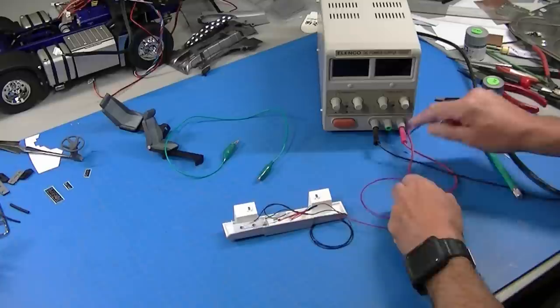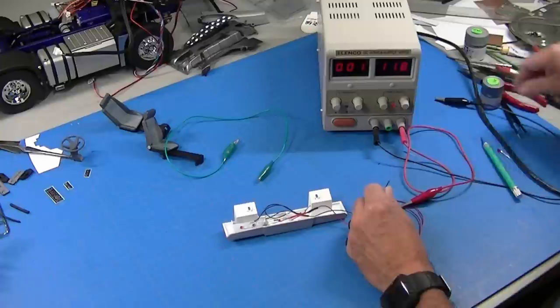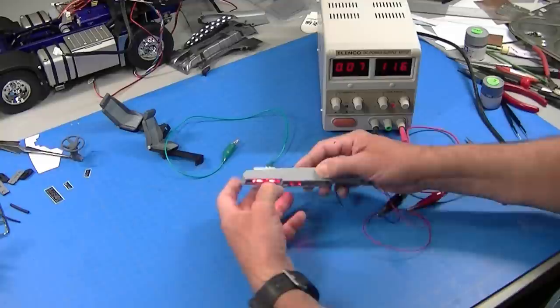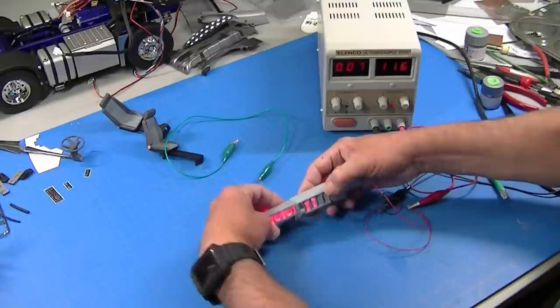Before I mount them though, I can take my power supply. And I can go to my positive lead here. My negative lead here. And those should light up. You can see they light up. And that's going to give me my dash lighting. So also you'll notice that these light up the back. So after I glue these in, I'm going to paint them with some black paint to prevent any light bleed from behind the panel. But I think that's going to look pretty good.